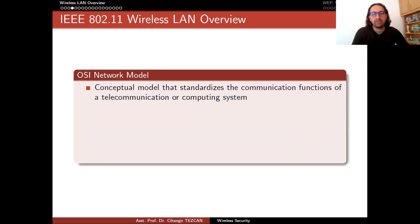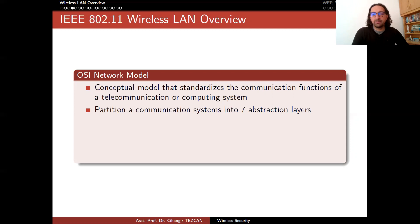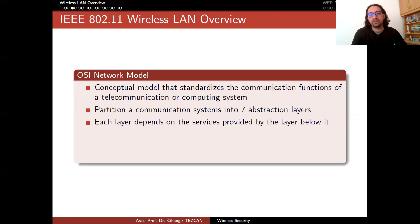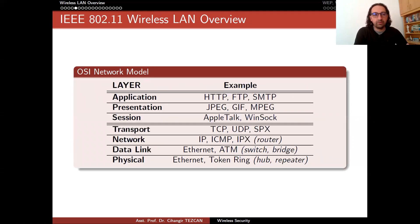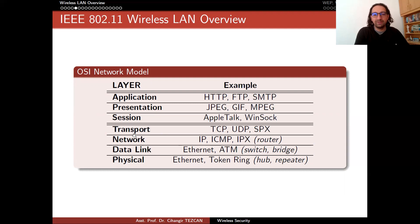Let's move on to a wireless LAN overview and look at what the OSI network model looks like. This is a conceptual model that standardizes the communication functions of a telecommunication or computing system. It partitions communication systems into seven abstraction layers. Each layer depends on the services provided by the layer below it, and each layer fully encapsulates implementation details — so a layer does not know anything about the particular implementation of the layer below it.